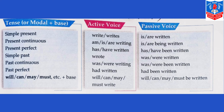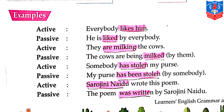Now let's have a look at these examples from your textbook on page number 73. The first one is written in active and you have to change it to passive. The first sentence is: 'Everybody likes him' — this is in active voice. We will make it passive by saying 'He is liked by everybody.' In Hindi: 'Usse sab pasand karte hain' is the active voice, and 'Woh sabke dwara pasand kiya jata hai' is the passive voice.